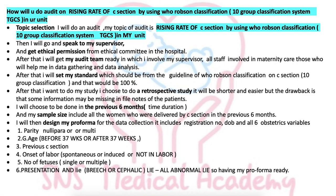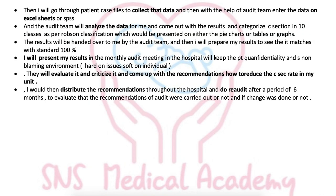The third step is data collection. I will design a proforma for data collection. The proforma includes the patient registration number, date of birth, and all six obstetric variables: parity (nullipara or multipara), gestational age (before or after 37 weeks), previous C-section, onset of labour (spontaneous, induced, or not in labour), number of fetuses (single or multiple), and presentation (breech or cephalic) and abnormal lie. With my proforma ready, I'll go through patient case files to collect data, then enter the data into Excel sheets or SPSS with the help of the audit team, and hand over all proformas to the audit team for analysis.